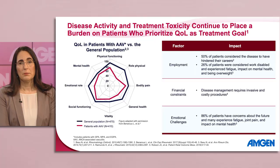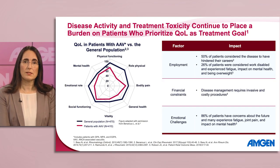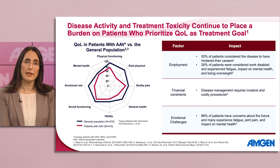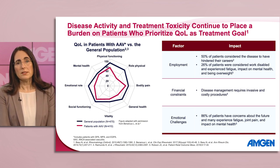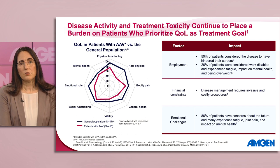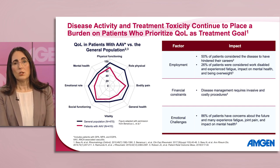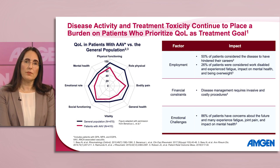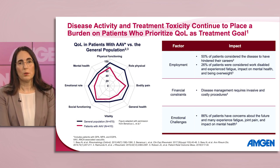The combination of disease activity and treatment toxicity also place a burden on patient quality of life. Patients with ANCA-associated vasculitis report reduced quality of life, including physical and emotional aspects, compared with the general population. Though not specifically validated for ANCA-associated vasculitis, tools such as the SF-36 can help us quantify the effect of disease on quality of life, compared to the general population. Scores for each dimension on the SF-36 range from 0 to 100, with higher scores indicating better health-related quality of life.